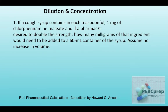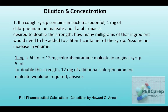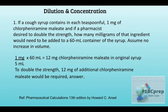A teaspoon equals five milliliters, so we have one milligram in five milliliters. The final volume is 60 milliliters. Assuming no increase in volume: 60 mL contains 12 milligrams of chlorpheniramine maleate in the original syrup. To double the strength, we simply add 12 milligrams more.